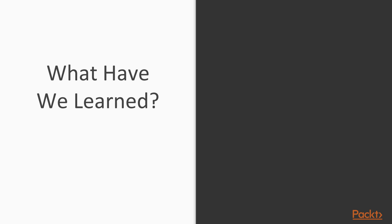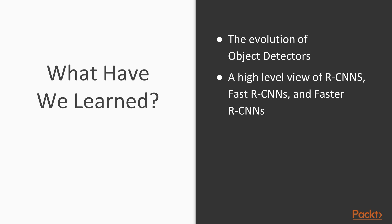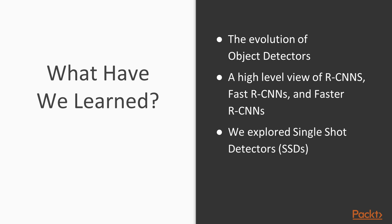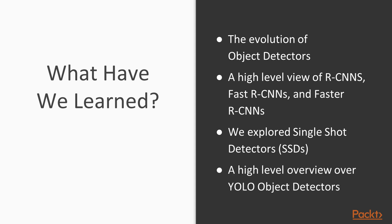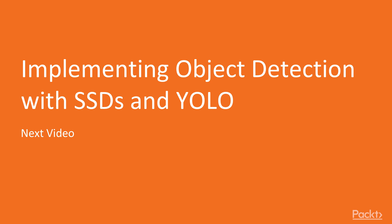To summarize, we covered the evolution of object detectors from Haar cascade classifiers and HOG to RCNNs, Fast RCNN, Faster RCNN, Single Shot Detectors (SSDs), and finally YOLO up to YOLOv3. In the next video, we'll start implementing object detection with SSDs and YOLO in Python using OpenCV 4. Stay tuned!